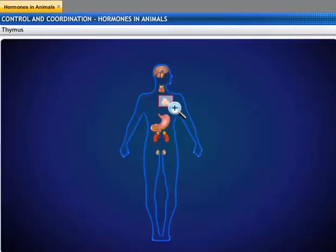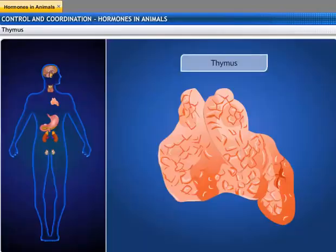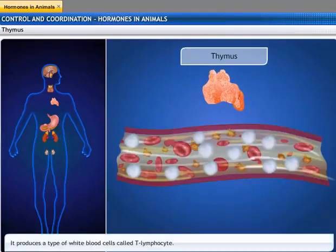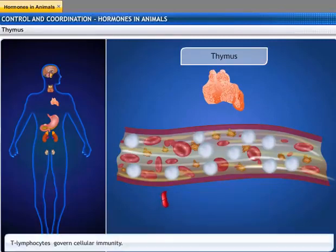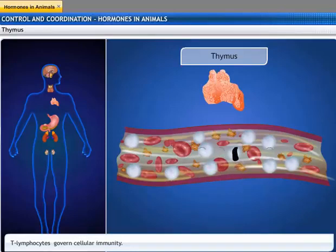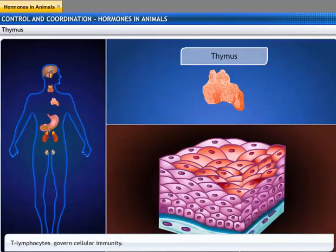The thymus is located in front of the heart, in the upper part of the sternum. The thymus possesses a type of white blood cells known as T-lymphocytes. These T-lymphocytes govern cellular immunity, which means they help cells recognize and destroy invading bacteria, viruses, abnormal cell growth such as cancer, and foreign tissue.